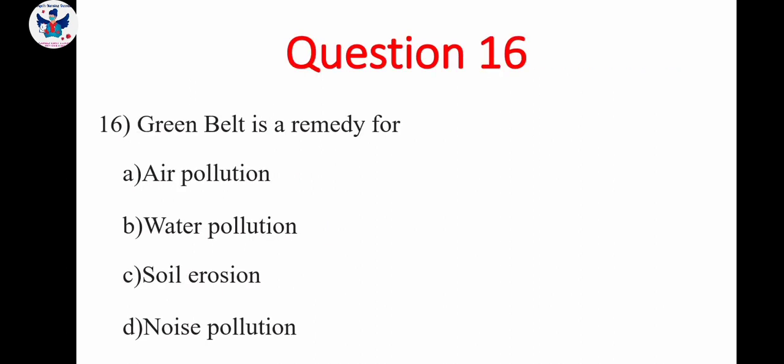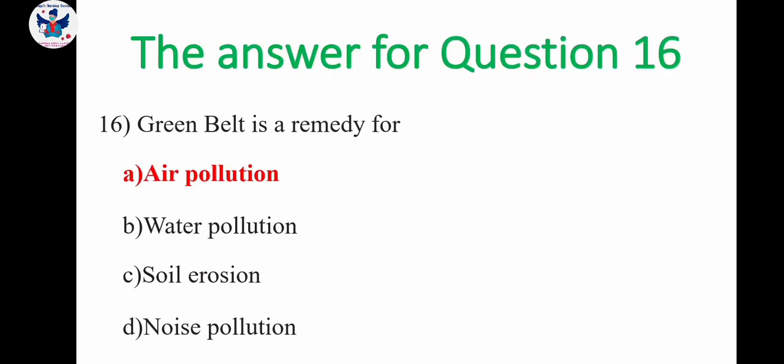Next, question 16. Green belt is a remedy for air pollution. B, water pollution. C, soil erosion. D, noise pollution. The correct answer is option A, air pollution. So green belt is a remedy for air pollution.